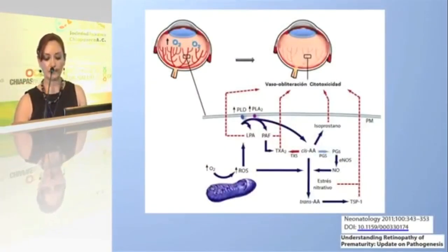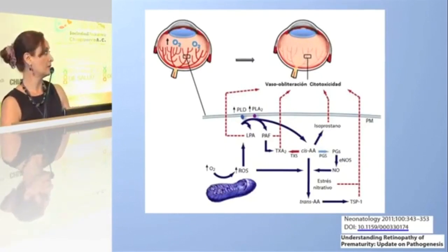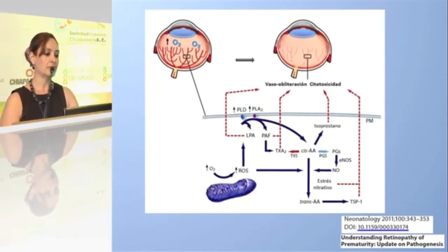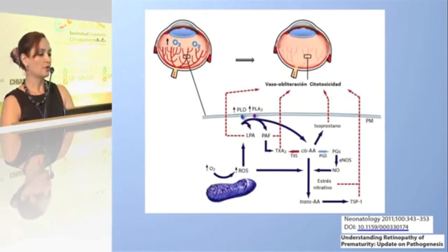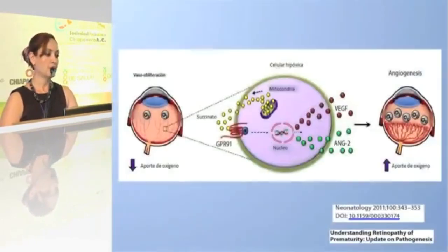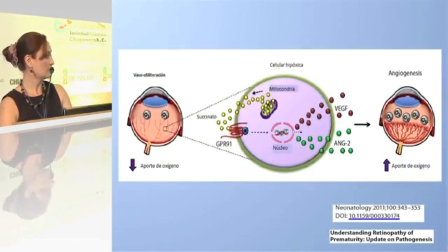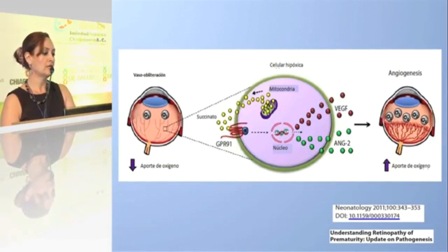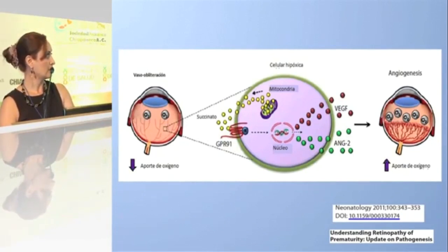Retinopathy is described in two phases. The first phase is vasobliteration: increased oxygen releases free radicals, generating pro-inflammatory substances such as thromboxane and isoprostane, causing vasobliteration in the premature retina. Subsequently, following vasobliteration and decreased oxygen supply, substances such as succinate are released, which stimulate receptor GPR-91, in turn stimulating production of VEGF and angiopoietin-2, causing uncontrolled retinal vascular growth.